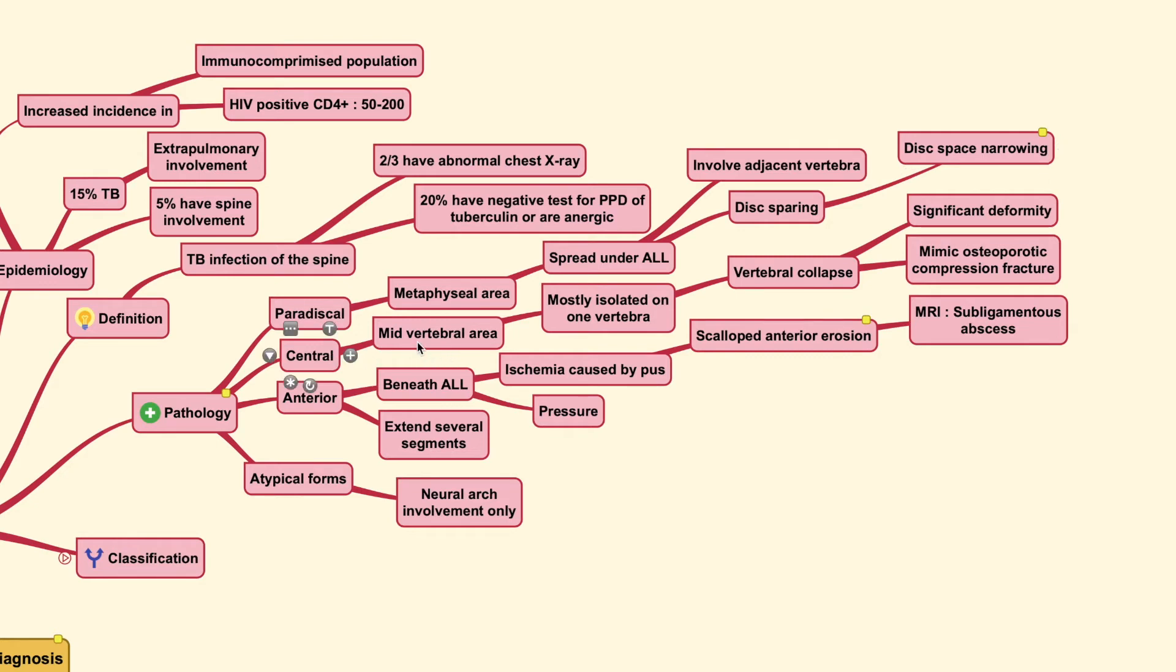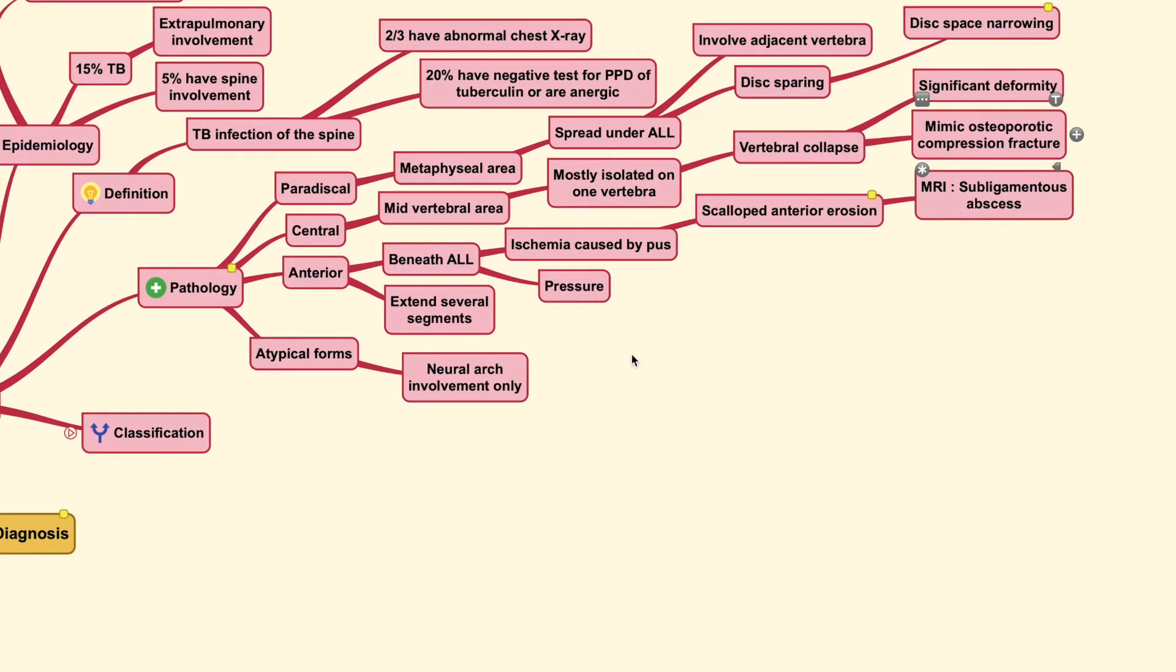And next would be the central type which you could find in the mid vertebral area and usually mostly are isolated on one vertebrae only. Now, vertebrae collapse is common in these types of disease localization with the end results of significant deformity which could resemble the osteoporotic compression fracture sometimes found in the elderly population.